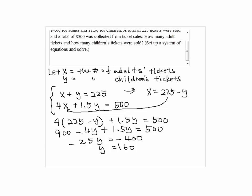To find x, we substitute y equals 160 into the top equation. So x plus 160 equals 225. So x equals 65. So we have 160 children's tickets and 65 adult tickets.